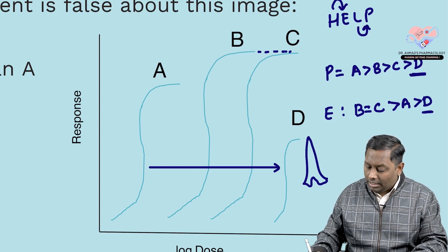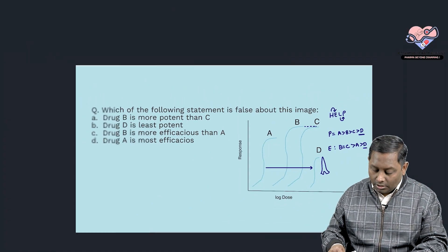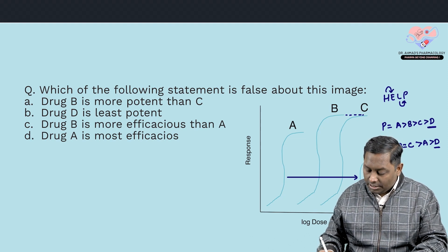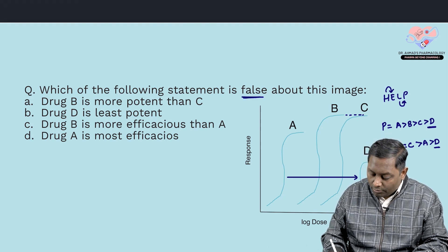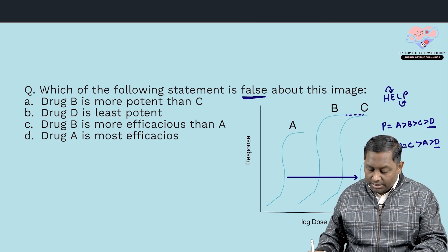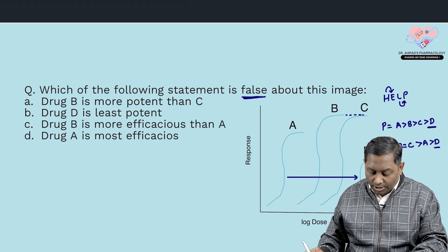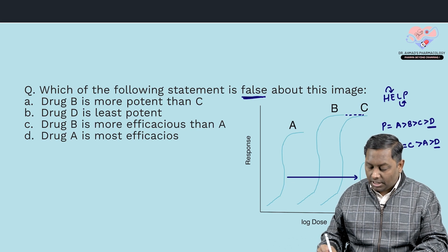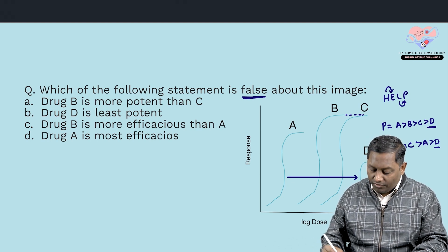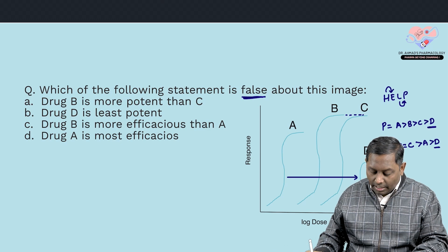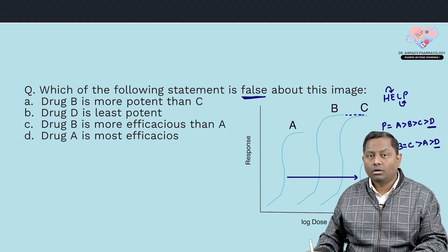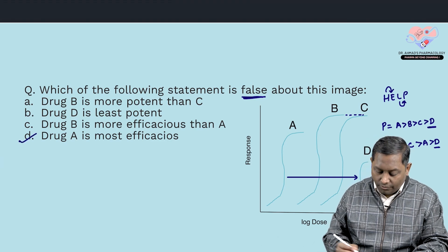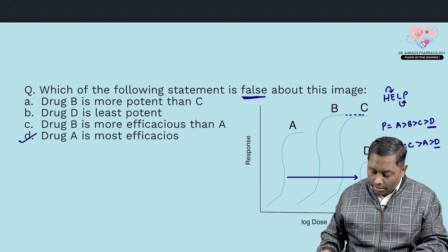Next in efficacy order is A, then D — so drug D is the least potent and also least effective. Reading the options: 'B is more potent than C' — yes. 'D is least potent' — yes. 'B is more efficacious than A' — yes. 'A is most efficacious' — NO, that is false, since B is equi-efficacious to C and both are higher.